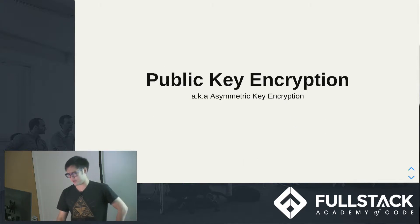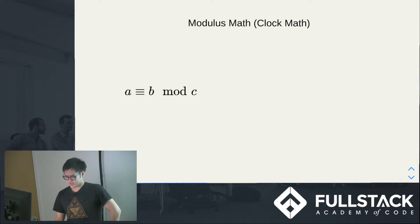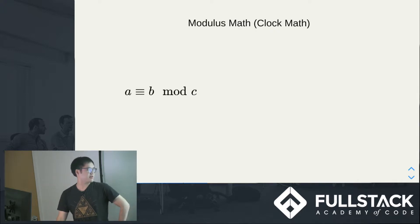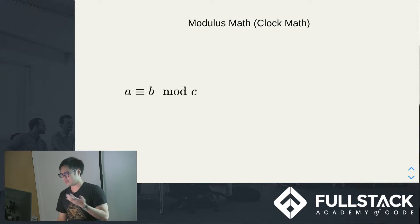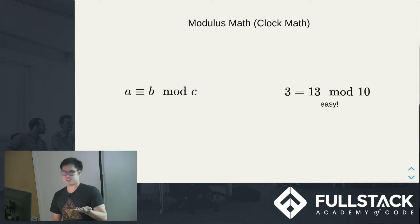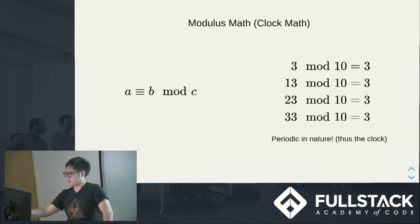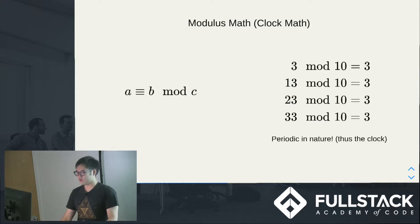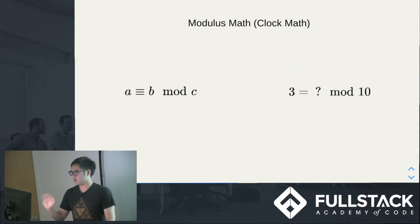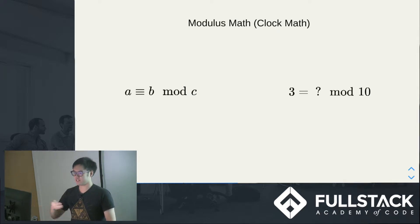So this is where public key encryption comes into play. I'm going to cover a little bit of modulus math. Modulus math is a subset of math you're very familiar with — you use it in JavaScript all the time. It's the mod operator. 13 mod 10 is 3 — very easy. It's the remainder instead of the quotient. The cool thing about it is that it's periodic in nature. 3, 13, 23, 33 mod 10 will all equal 3. That's why it's called clock math, because it's periodic.